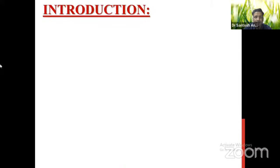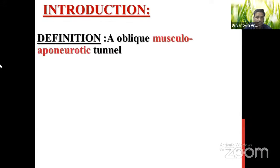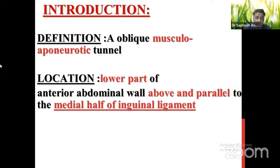The inguinal canal is an oblique musculo-aponeurotic tunnel present in the lower part of the anterior abdominal wall, above and parallel to the middle half of the inguinal ligament.